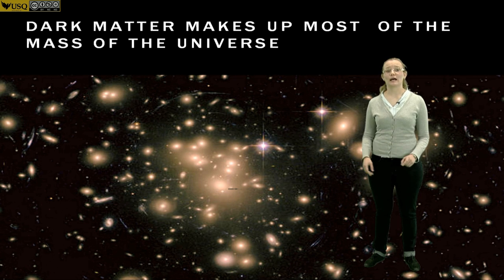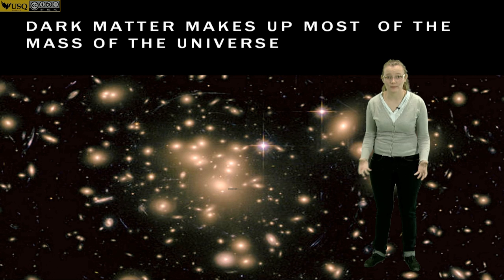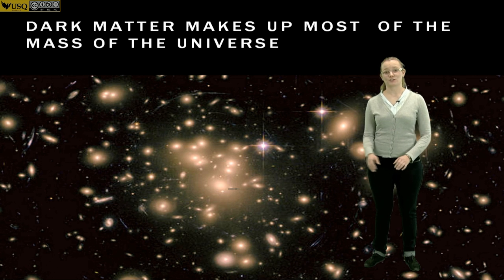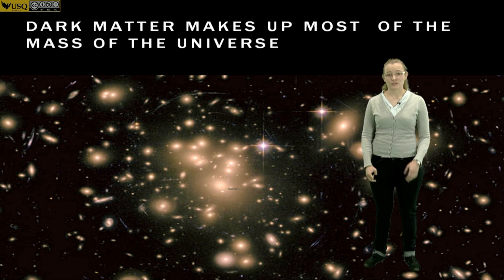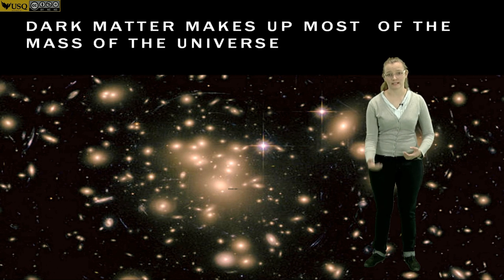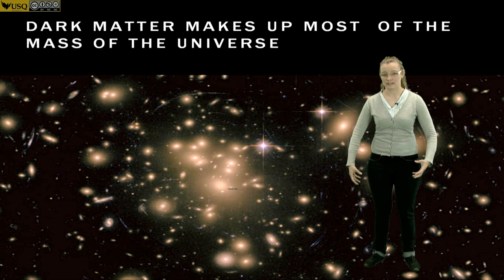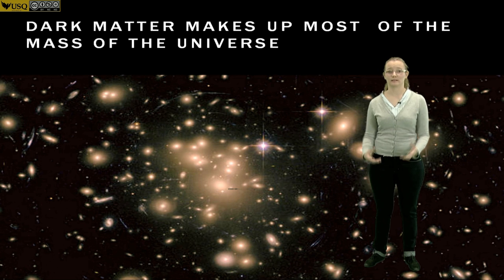Secondly, we can look at the gravitational effects around this cluster, and that's shown really beautifully here by lovely arcs that surround this cluster, and that's called gravitational lensing. So those arcs of light coming from a distant galaxy far behind this cluster are being bent by the mass of this cluster, and we use that to also weigh the cluster.